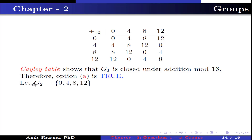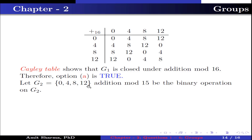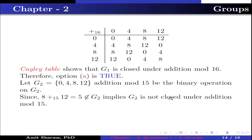Let G2 be the set {0, 4, 8, 12} and addition mod 15 be the binary operation on G2. Since 8 +₁₅ 12 = 5, because 12+8=20 and when divided by 15 the remainder is 5, which does not belong to G2. This implies G2 is not closed under addition mod 15. Therefore option B is false.